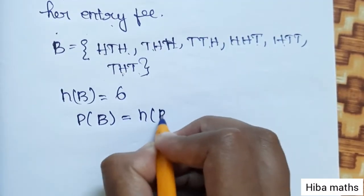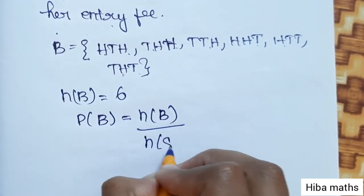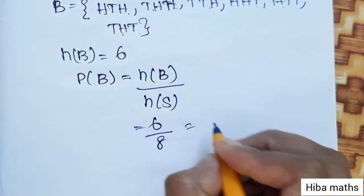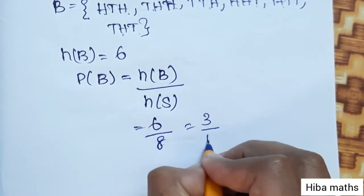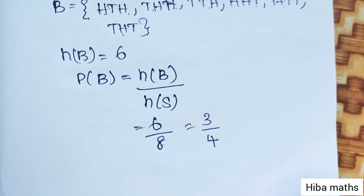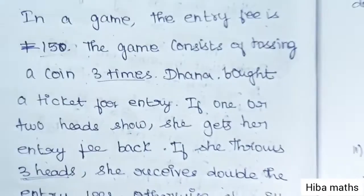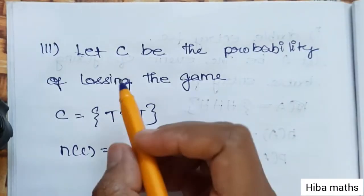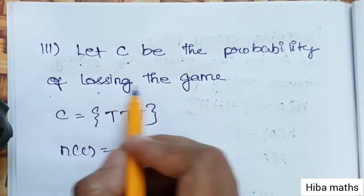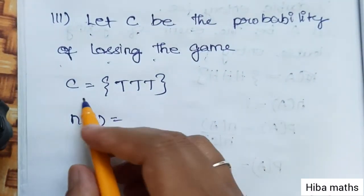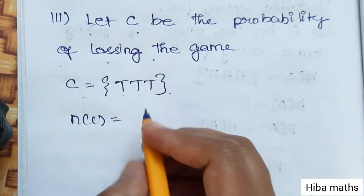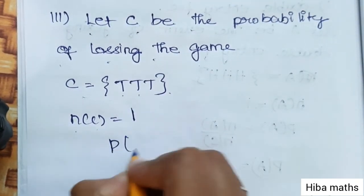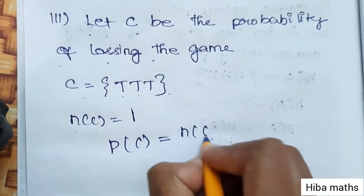P(B) = n(B) / n(S) = 6/8. Simplifying by cancelling 2, we get 3/4. Now for the last part, she loses the game when no heads appear — that is TTT. Let C be the probability of losing the game. So C = {TTT}. N(C) = 1. P(C) = n(C) / n(S) = 1/8.